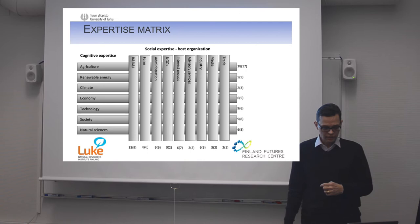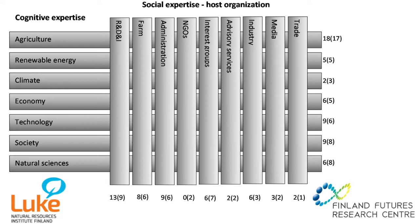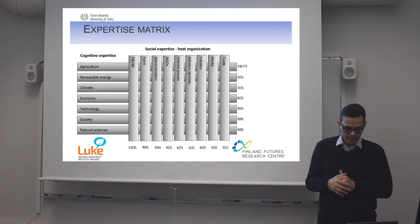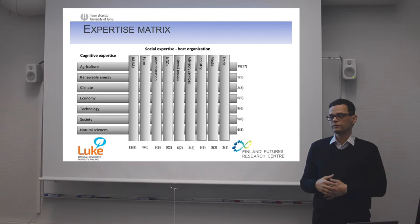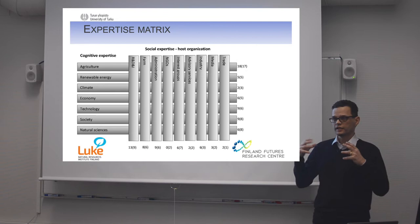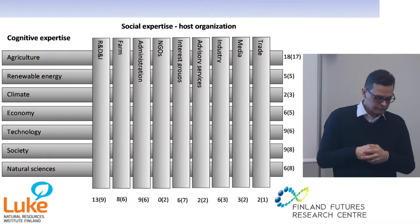The expertise matrix was developed by Osmo Kuusi, a Finnish futurist. It defines expertise in two categories. The cognitive expertise — what people know about. In this particular panel, we wanted people who know about agriculture, renewable energy, climate policy issues, economy, technology, and society. And then we also wanted people who have a natural scientific background. Then the social expertise, which tells you about your profession and how you are viewed by other people in the society — not just what you know, but what is your position.